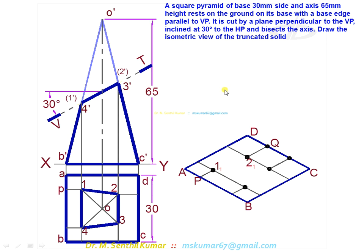To mark cutting point 1 in isometric, take the height of 1 dash from XY. Through 1, set that. That is, in isometric, the 1 in isometric is equal to height of 1 dash from XY. Follow the same for the remaining points 2, 3 and 4.